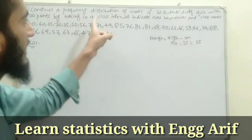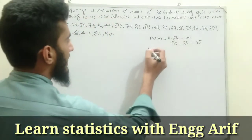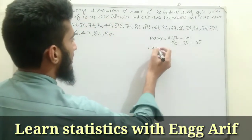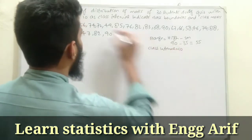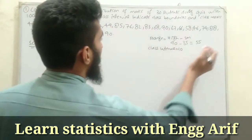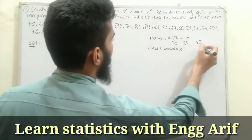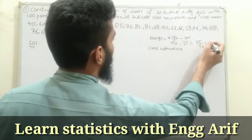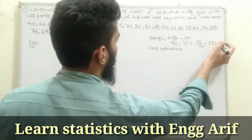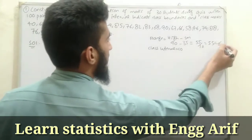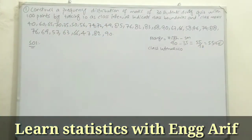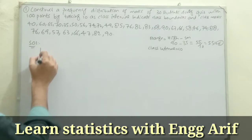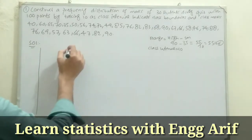The question asks us to construct a frequency distribution with 10 as the class interval. So we divide the range: 55 divided by 10 gives us 5.5, which rounds up to 6. That means we have a total of 6 class intervals.